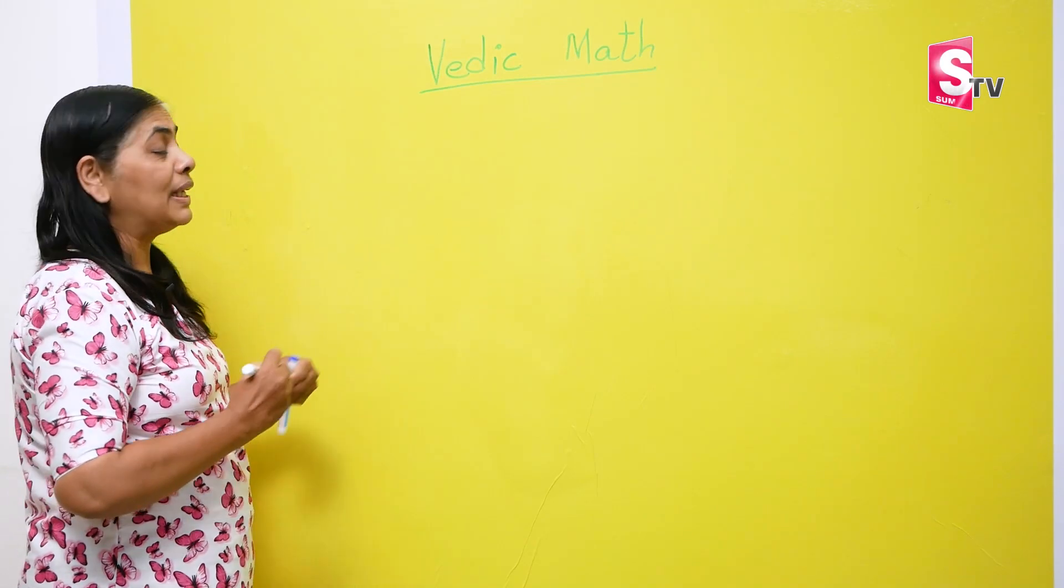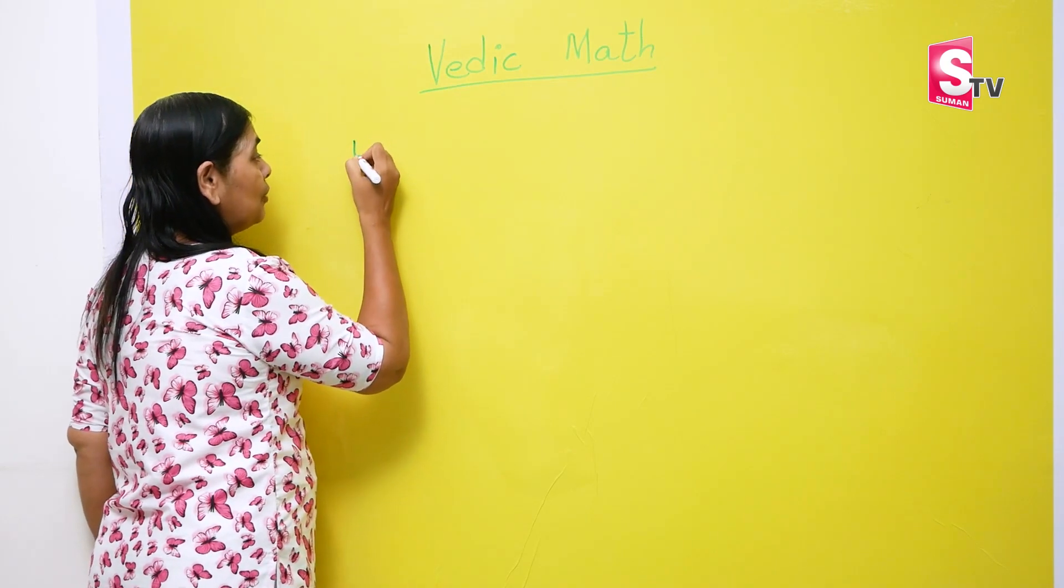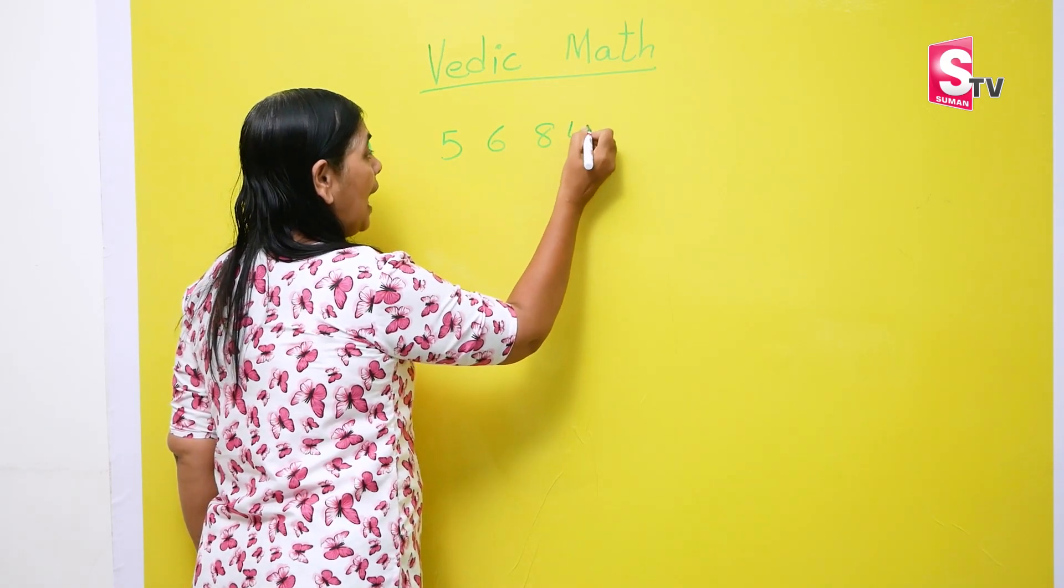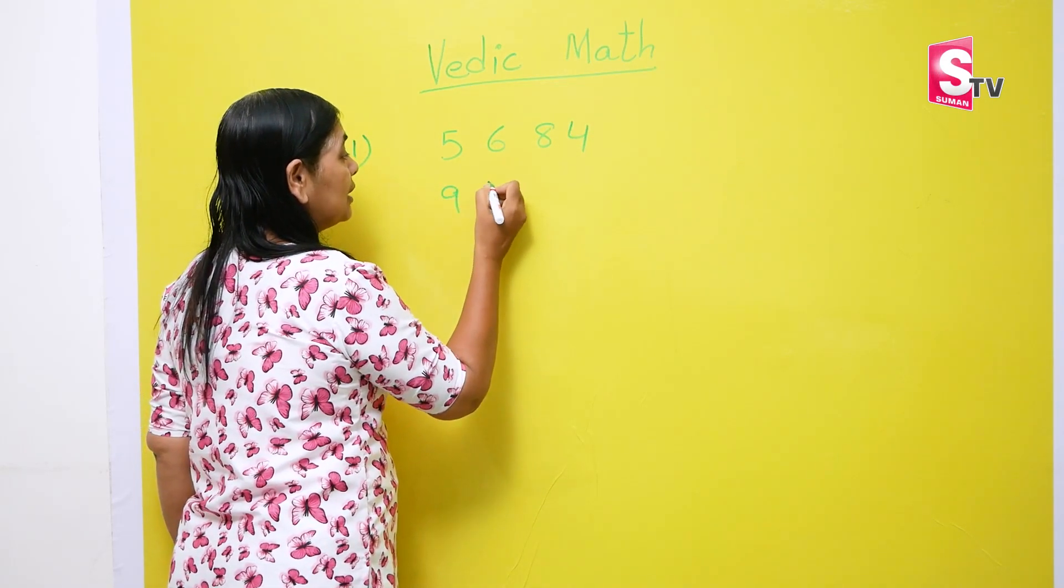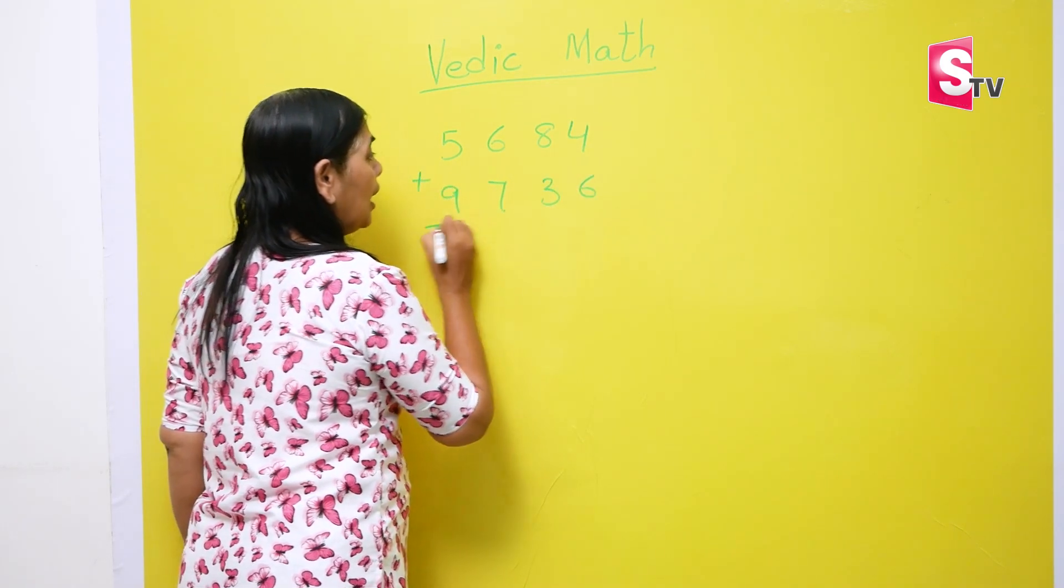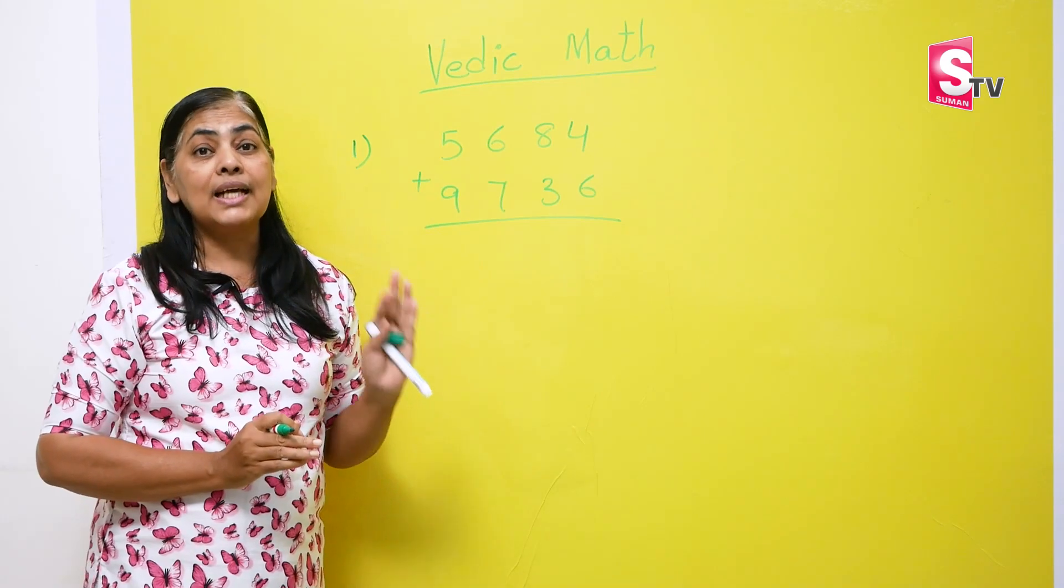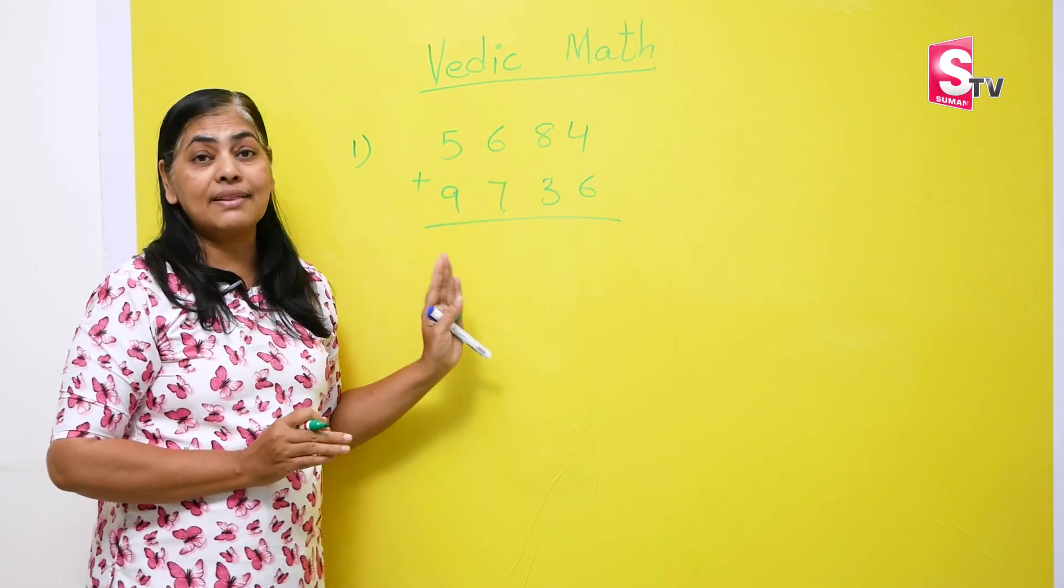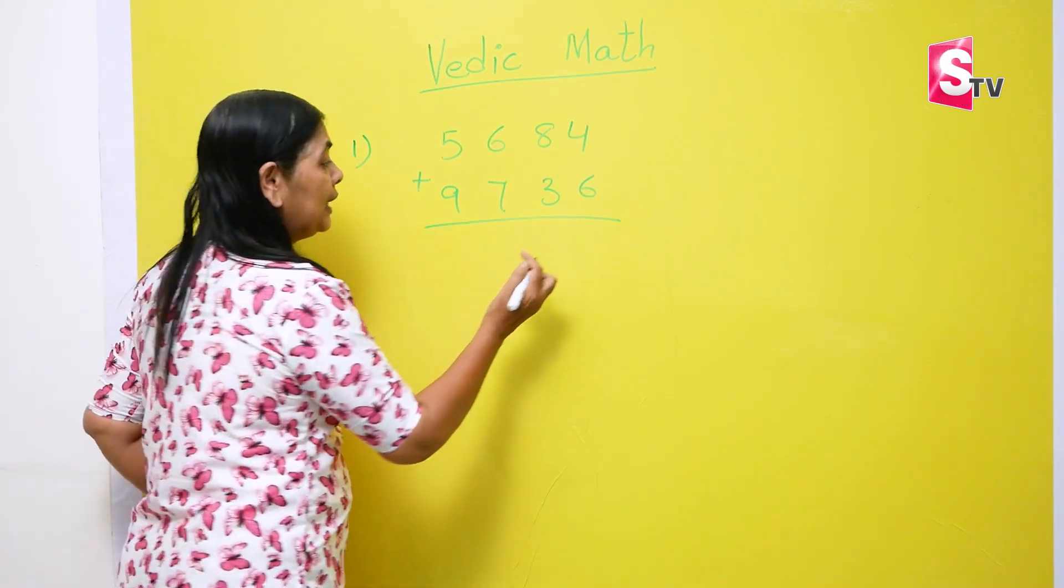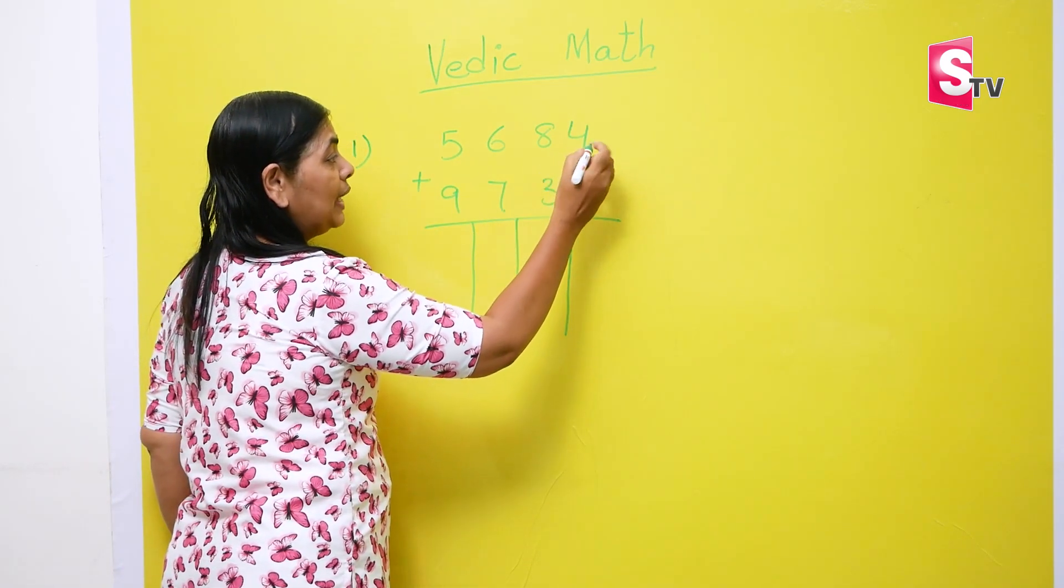To begin with, we'll see how we can solve any 3 digit or 4 digit addition. So first one, suppose we have 5684 and we are supposed to add it with 9736. Now, if you add it directly, we need to do the carry over. But most of the kids forget the carry over and they make lots of mistakes here. So what we will be doing is, the easiest way to do is, see this, draw lines. Because we have 4 digits, we'll draw lines.